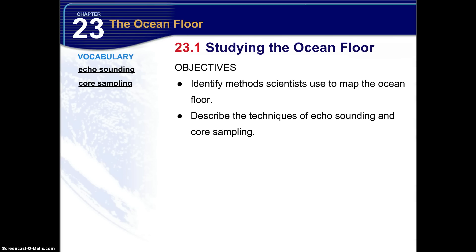You'll be more familiar with those terms if you have the definitions prior to starting this section. The two objectives are: identify methods scientists use to map the ocean floor, and describe techniques of echo sounding and core sampling. There is also a mathematical concept I want you to have in your lab notebook because we'll revert to it a few times in this chapter. The first one is: distance equals rate times time.